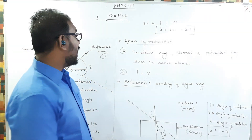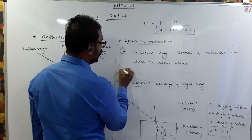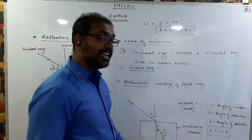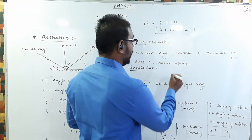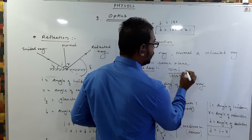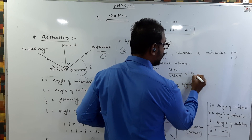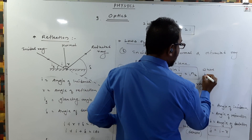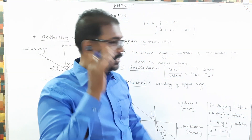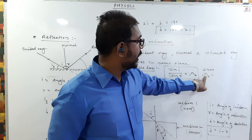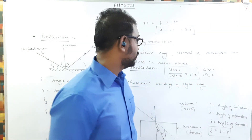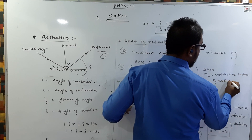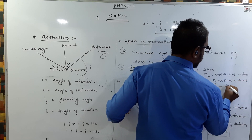The second law is the relationship between I and R. Here, angle of incidence and angle of refraction are not equal. The relation is given by Snell's law. Snell's law states: sine of angle of incidence divided by sine of angle of refraction equals the refractive index of medium 2 with respect to medium 1, written as n₂₁. Here n stands for refractive index.